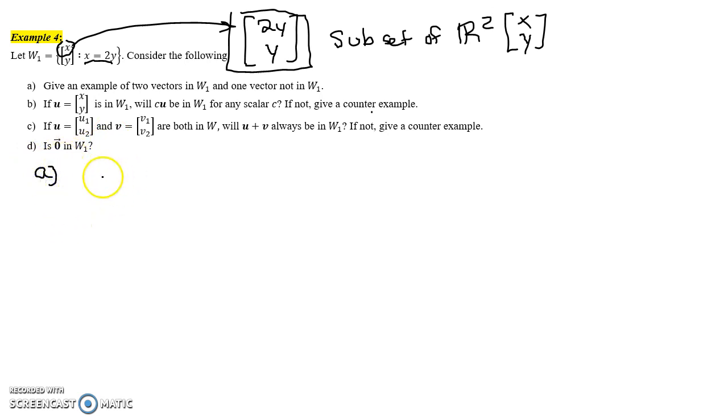So giving a couple examples of vectors that are in W₁, we just want anything where the first component is 2 times the second component. I could start by filling in whatever I want in the second component, and then put 2 times that for the x component. This is the vector we get when y equals 5. If y equals negative 1, I make the y component negative 1, so the x component needs to be 2 times that, which is negative 2.